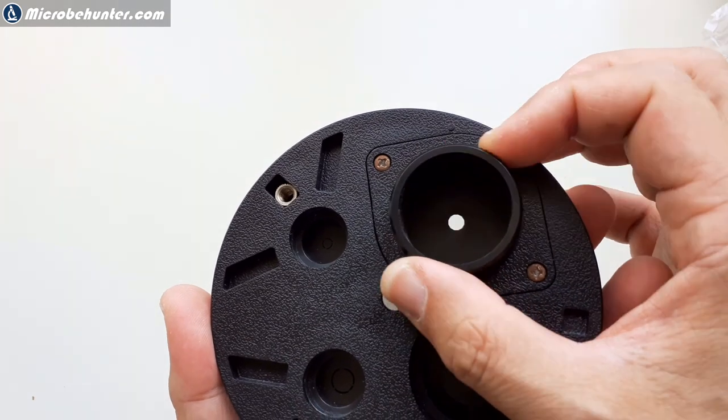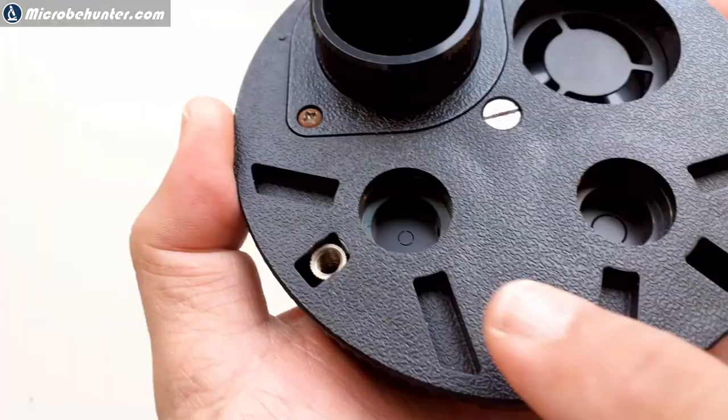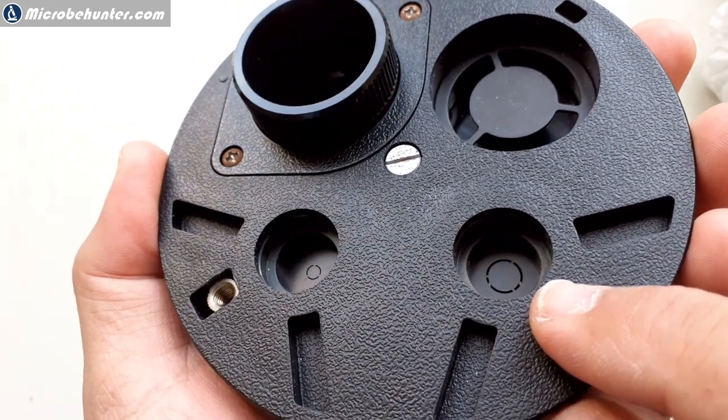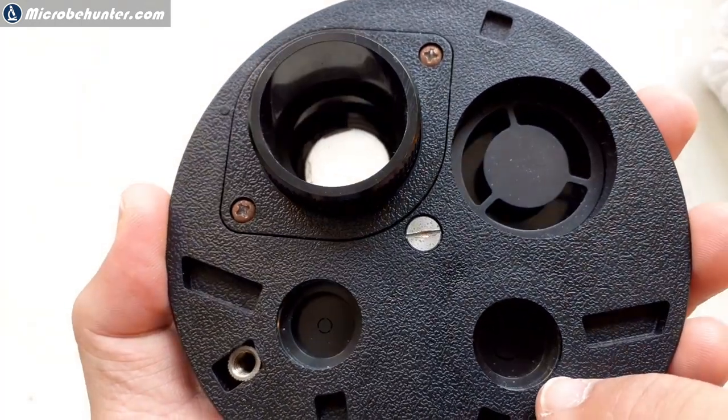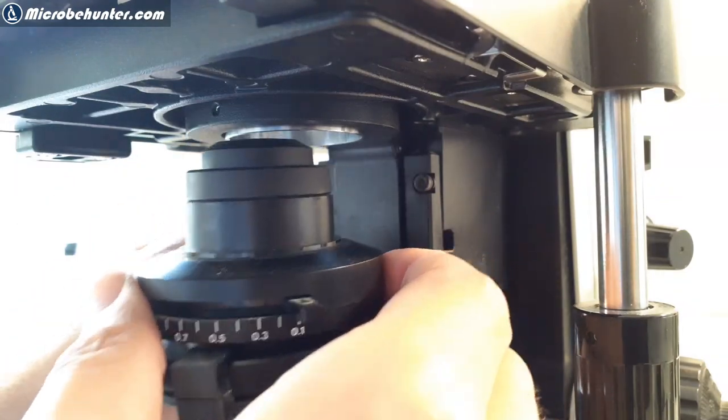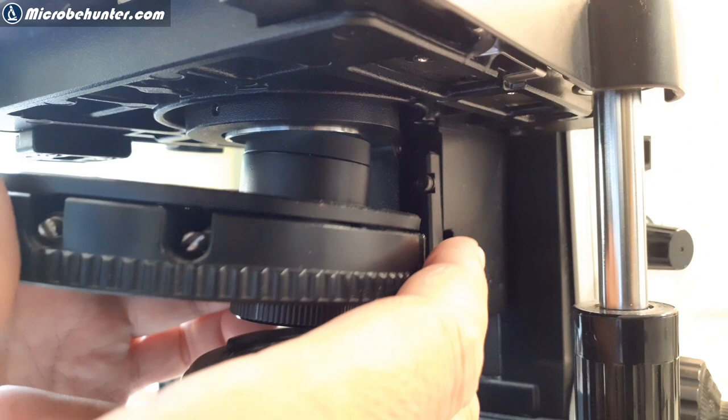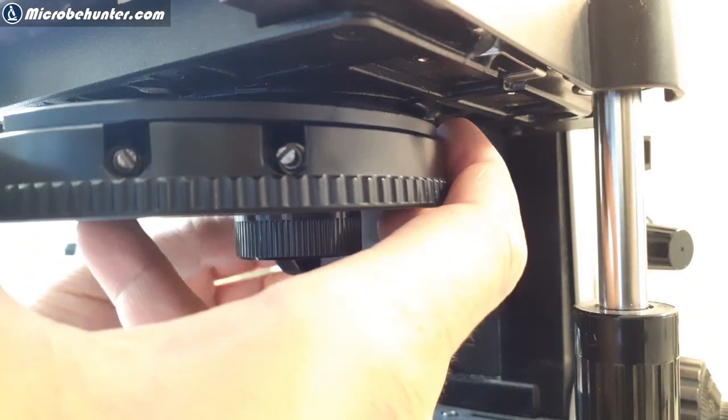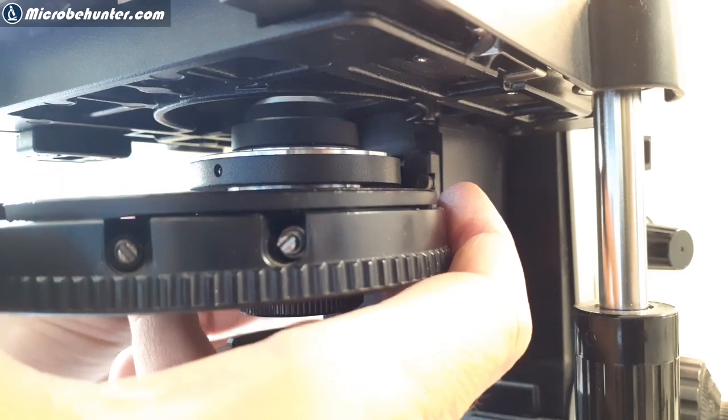These were the screws for centering, and this now is the condenser aperture diaphragm. Here are the phase annuli for the two different objectives, and there is also the dark field patch stop. I'm now removing the old condenser and I'm putting in now the new one. Now you can actually see the screws for centering of the condenser much better.